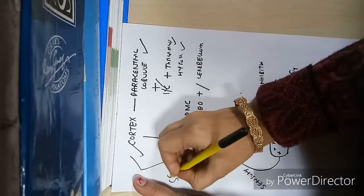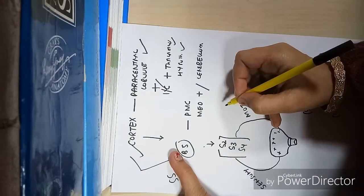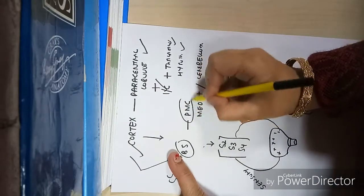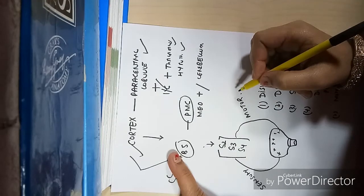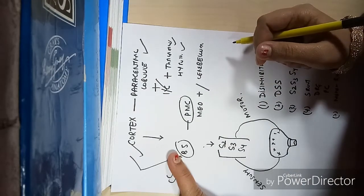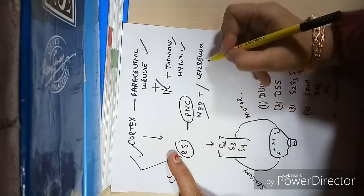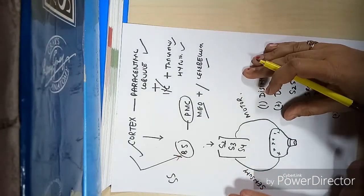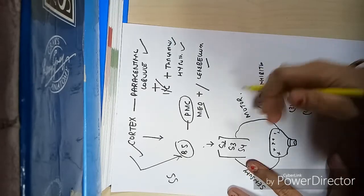In the brainstem, the pons plays a major role with the PMC (pontine micturition center), also called Barrington nucleus. We also have the medulla and cerebellum. In the spinal cord, segments S2, S3, and S4 play a major role, with Onuf's nucleus in the anterior horn cells.